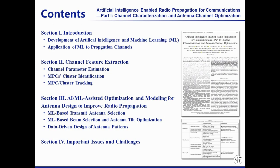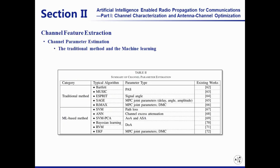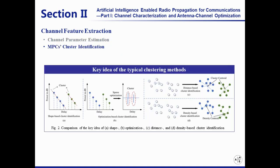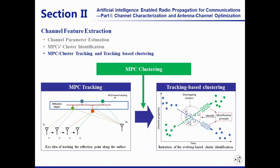Finally, some important issues and challenges are discussed in section four. For the channel feature extraction methods, we first review the traditional channel parameter estimation methods such as Bartlett beamformer, MUSIC algorithm, SAGE, and so on. Then we investigate the machine learning based estimation methods such as SVM, artificial neural network, PCA, RVM, and so on. All algorithms have been listed in table two. In addition, as an important part of channel feature extraction, MPC cluster identification methods are summarized. The key ideas of four typical clustering methods are given in figure two, which are shape-based, optimization-based, distance-based, and density-based cluster identification algorithms. For time-varying channels, the MPCs not only need to be clustered but also need to be tracked; therefore some tracking algorithms are presented in the overview.